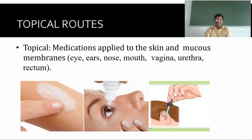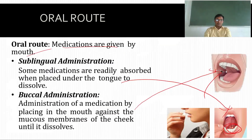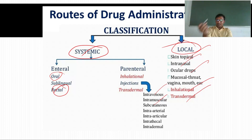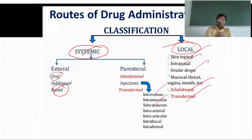These are the routes of drug administration. To summarize: enteral routes include oral, sublingual, and rectal. Parenteral routes involve inhalational, injections, and transdermal. Local routes involve skin topical, intranasal, ocular drops, mucosal, throat, vagina, mouth, ear, inhalational, and transdermal. With this, we are done with the routes of drug administration. Thank you for watching — if you like the content, please like, share, and subscribe.